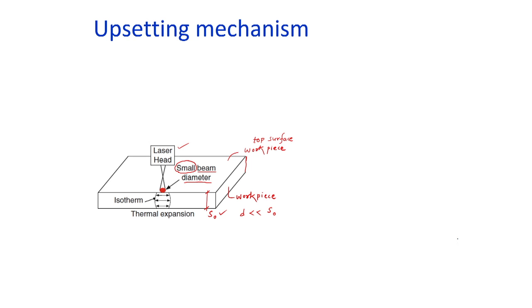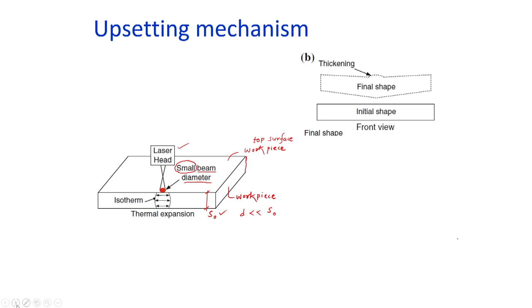There is a bead formation due to local strain hardening. When there is swelling or bead formation at the application of the laser beam, there is a reduction in the width of the work part, and it is used for the correction of plates. By continuously applying the laser beam, thickening occurs. There is little bending of the work part with respect to the initial shape, and there is a reduction in width. The final width W2 is less than W1, and this reduction is attributed to thickening at the laser spot diameter.